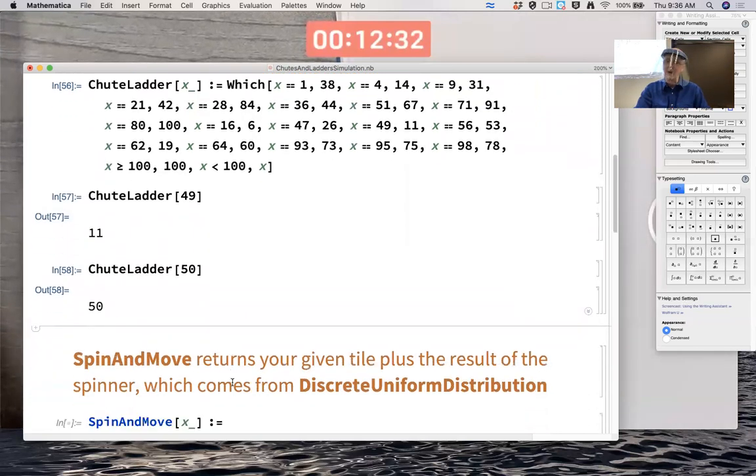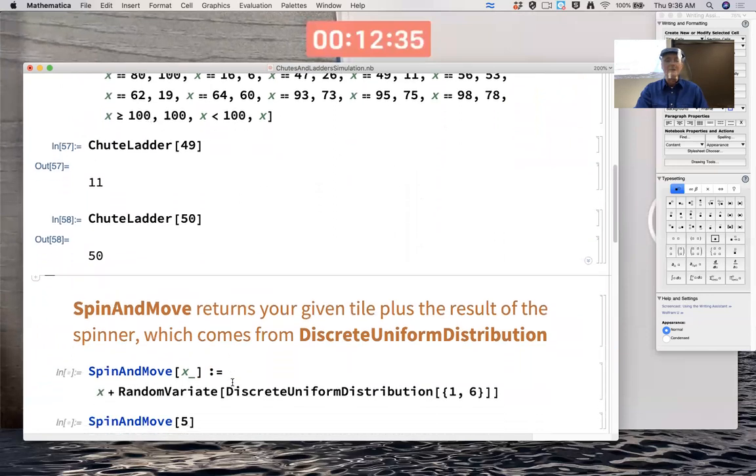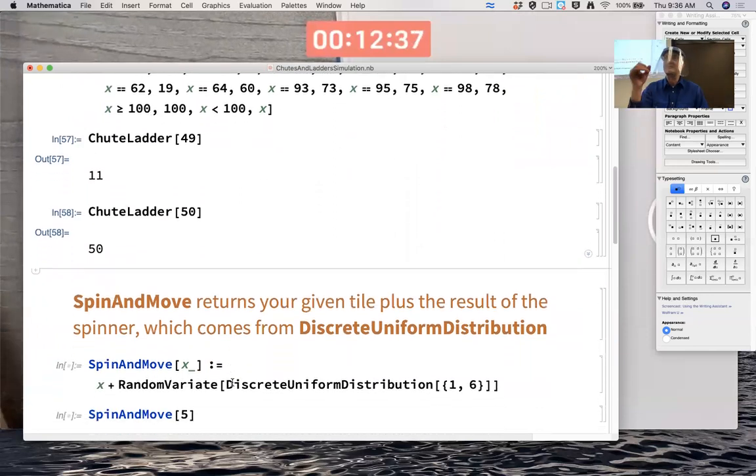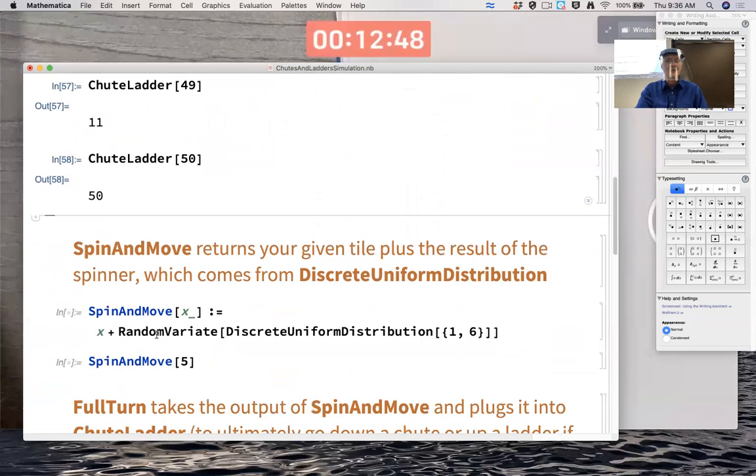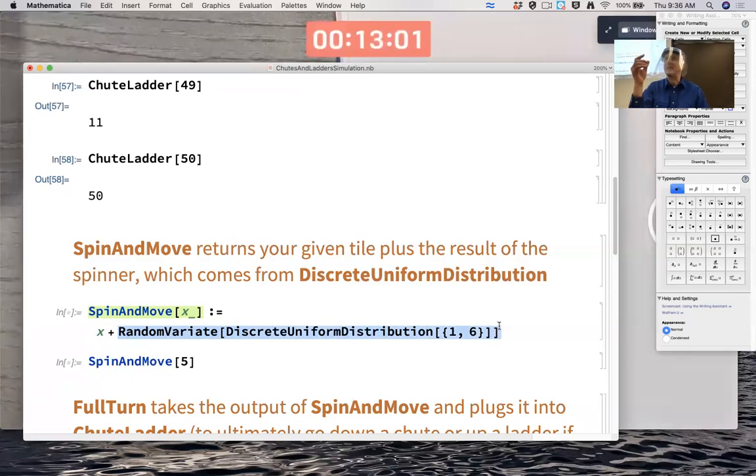Staying there, but I need to spin as well. Well, SpinAndMove takes into account the fact that you're going to flick the spinner and get one, two, three, four, five, or six, and then move as well, not taking into account chutes and ladders. So notice this function SpinAndMove takes an input x and takes that value of x and adds, hey, there's RandomVariate. RandomVariate DiscreteUniformDistribution one six. That's spinning, right? One, two, three, four, five, six all occur with equal probability.